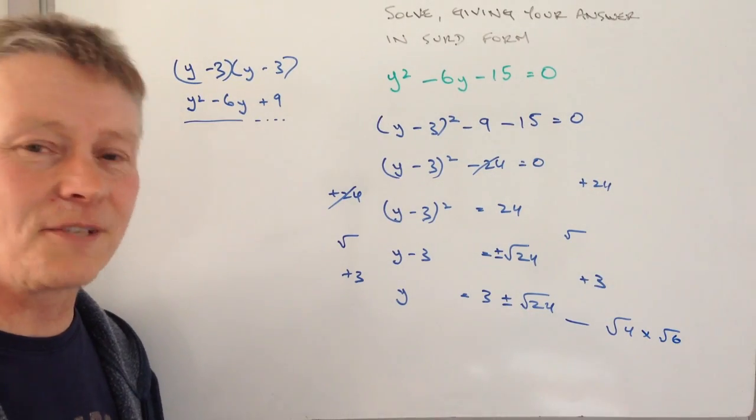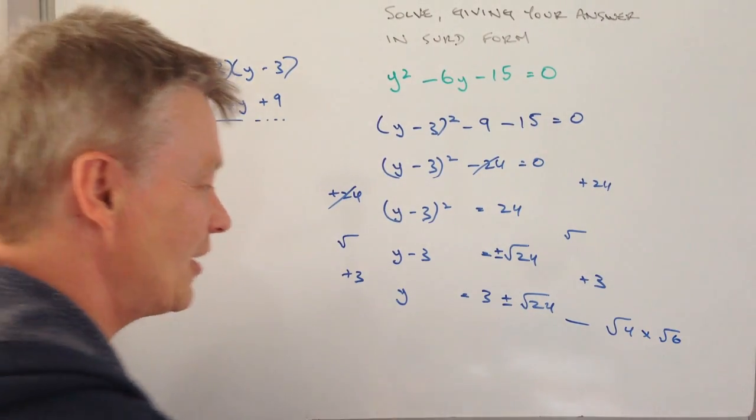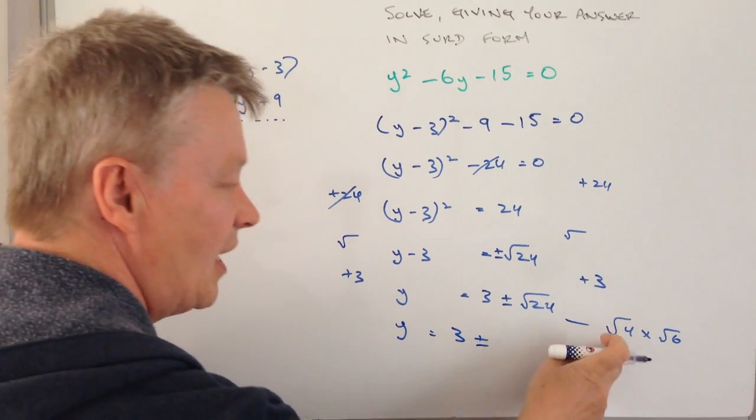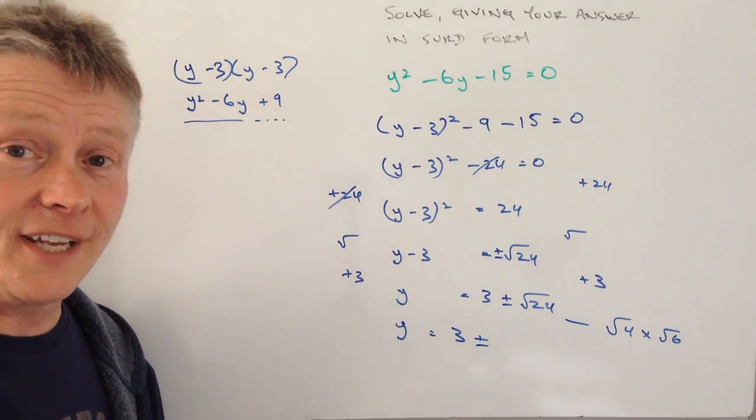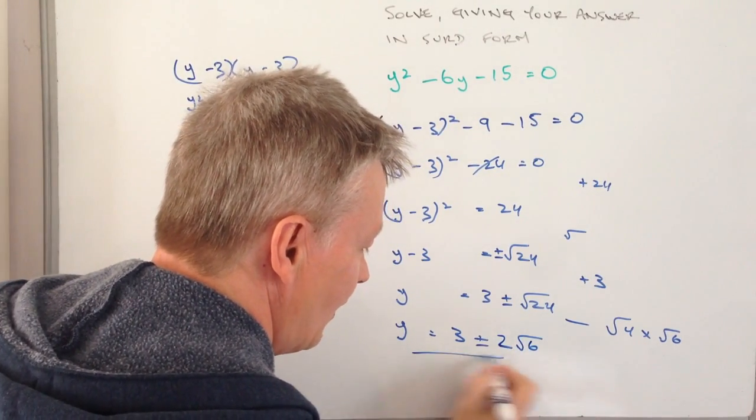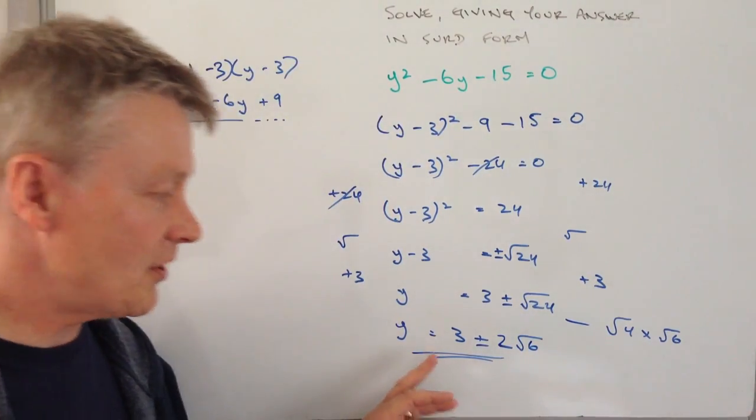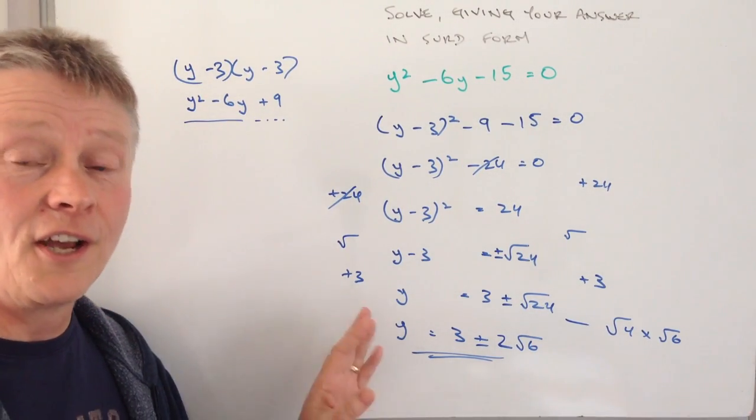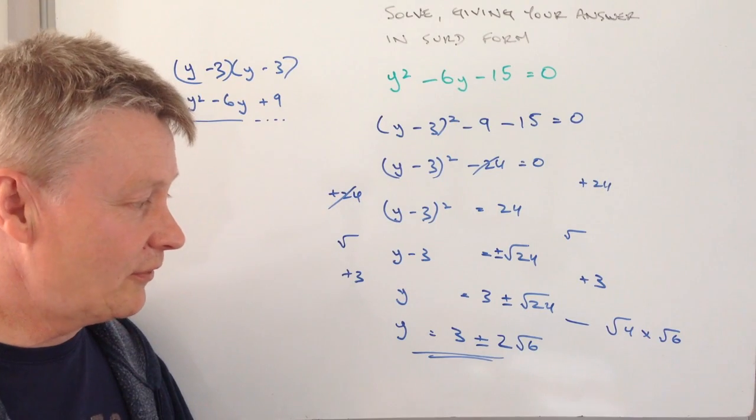So it's just considered to be a little bit neater to put y equals 3 plus or minus. Now the square root of 4 is 2 on its own, so that's 2 and then root 6. So that's the two answers of y. y is equal to 3 plus 2 root 6, or 3 minus 2 root 6.